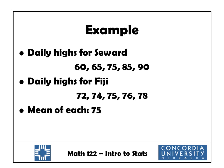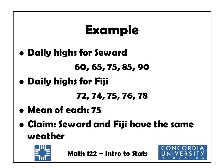Let's look at another example with two data sets: five randomly selected daily high temperatures from Seward and five from Fiji. When we calculate the mean of each, both come out to 75. Someone might claim they have the same weather, but that's clearly not the case. Seward's temperatures range from about 60 up to 90 — a wide range — whereas Fiji's range from 72 to 78, a very narrow range. To compare sets of data, we need measures of variation.